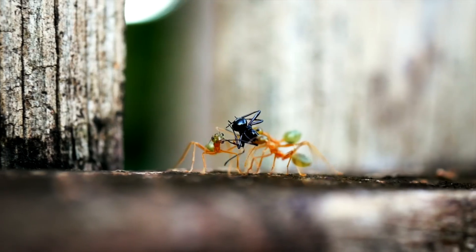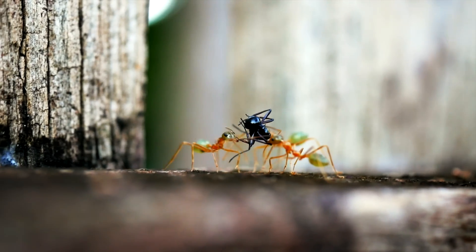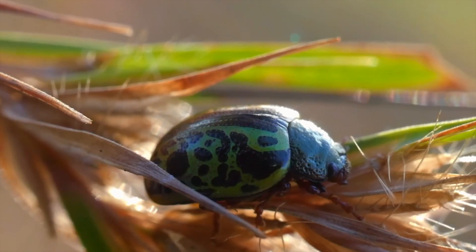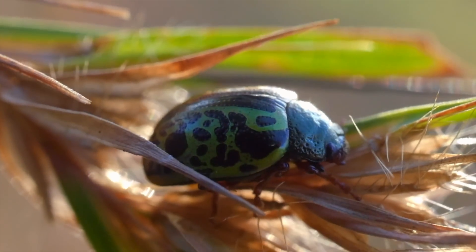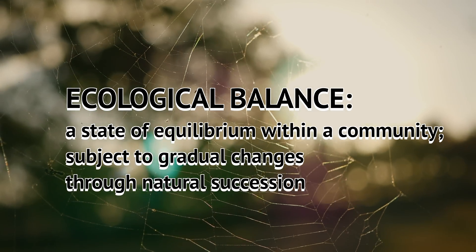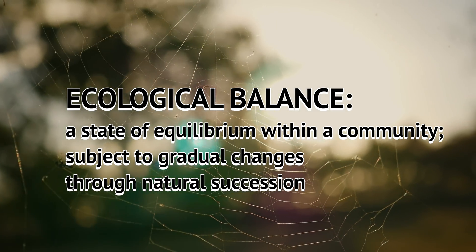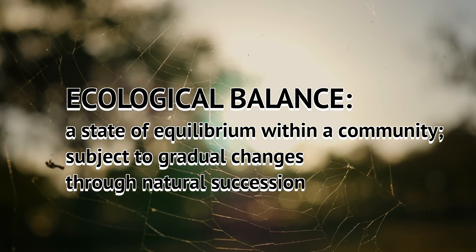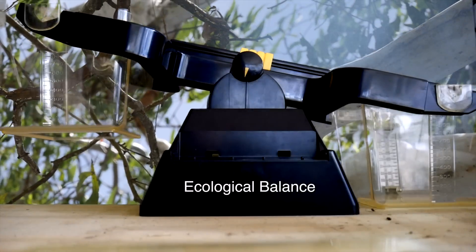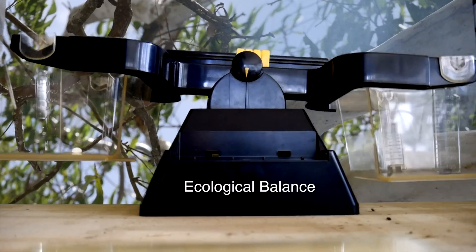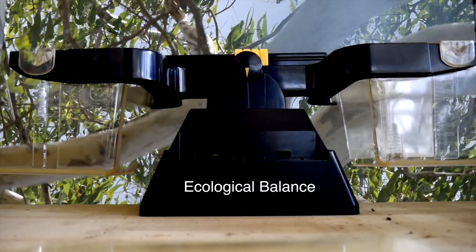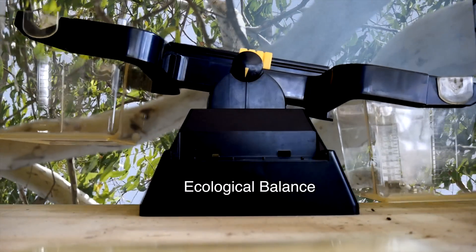Everything in nature is interconnected, and ideally there should be an equilibrium between living organisms, called an ecological balance. If one element of this natural balance is disturbed, then all elements in the ecosystem are disrupted.